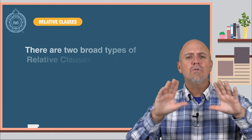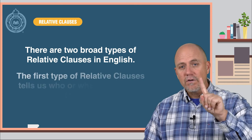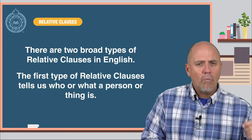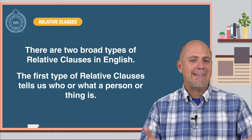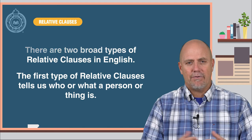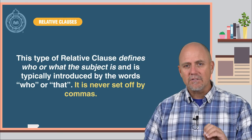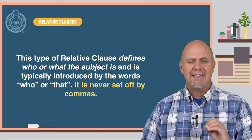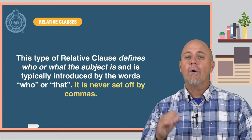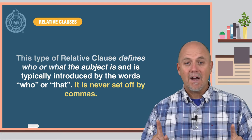There are two broad types of relative clauses in English. The first type tells us who or what a person or thing is — in other words, it tells us who or what the sentence is about. This type defines who or what the subject is and is typically introduced by the words who or that. It is never set off by commas.